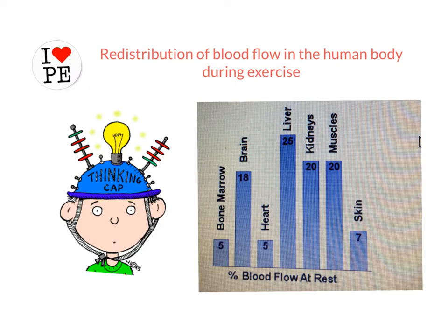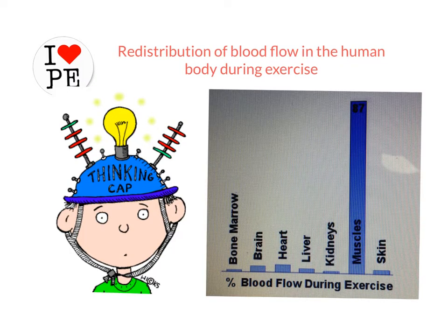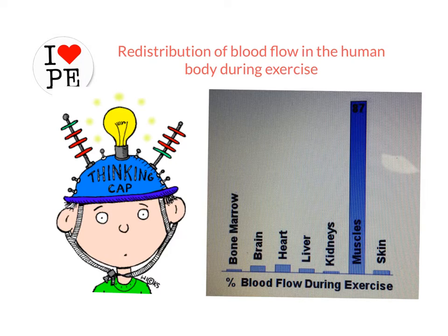During exercise, there is a significant difference in the percentage of blood flow and where it travels in the body. Unsurprisingly, the largest percentage of blood flow goes to the muscles. When performing activities such as football, rugby, or any physical activity involving gross muscle movement, the muscles need a supply of oxygen in order to perform effectively.